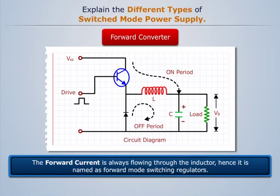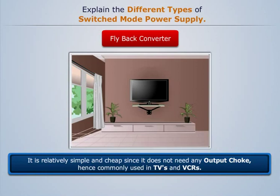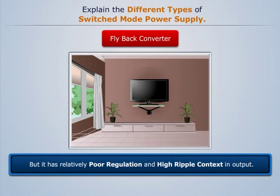Let's discuss now the flyback converter. It is relatively simple and cheap since it does not need any output choke, hence commonly used in TVs and VCRs. But it has relatively poor regulation and high ripple content in output.